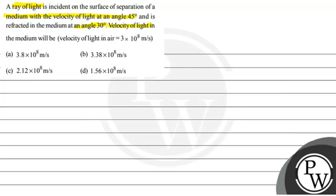Velocity of light in the medium will be - and the velocity of light in the air is equal to 3 into 10 to the power 8 meter per second.